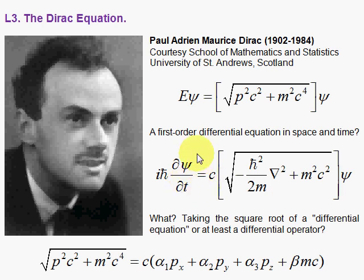Dirac is in search of a first-order differential equation for a candidate equation to describe the electron. So he takes the square root of the energy term we had before, e squared equals this underneath this radical, so e would be the square root. And here, the energy operator is no problem, it's the first derivative with respect to time, but what do you do with this thing?